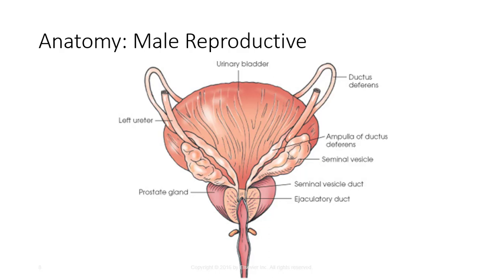The ejaculatory ducts average 1.3 centimeters long and originate behind the neck of the bladder. The two ducts enter the base of the prostate and function to eject sperm into the urethra before ejaculation. The prostate is an accessory genital organ averaging 1.25 inches or 3.2 centimeters long and encircles the proximal portion of the urethra. It lies anterior to the rectal ampulla and its ducts open into the prostatic portion of the urethra.